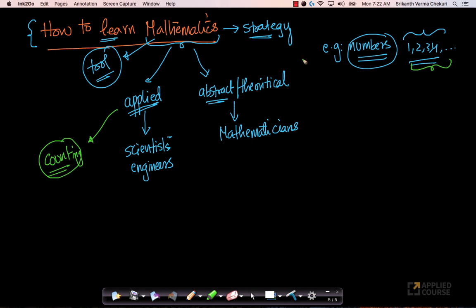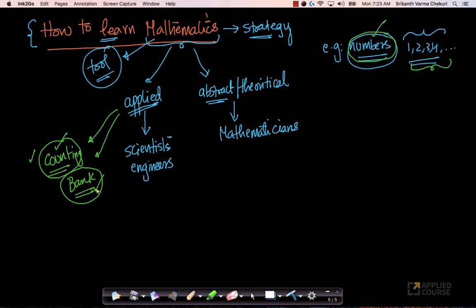That doesn't mean numbers are only useful for counting — as a kid you probably used numbers for counting, but there are tons of applications of numbers. For example, as you grow, you might open a bank account where you have credits and debits, interest payments — all sorts of things that also employ numbers and properties of numbers. So numbers is a foundational concept applied at multiple places. While you are learning mathematics, you may only be able to appreciate limited applications based on the context.